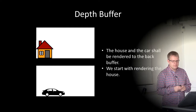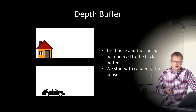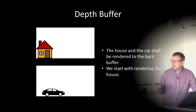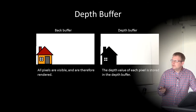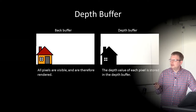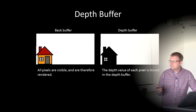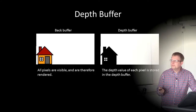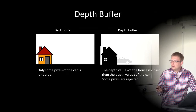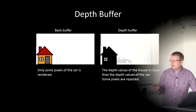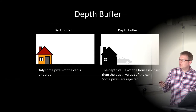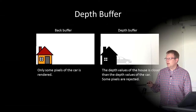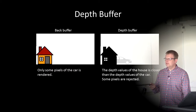As an example: we have a house and a car to render to the back buffer, with the house in front of the car. We render the house first and write the depth values to the depth buffer. Then we render the car — only some pixels of the car are rendered. The depth values of the house are closer than those of the car, so the car is partially hidden and partially visible behind the house. The pixels of the car that are behind the house, which have higher depth values, are discarded.